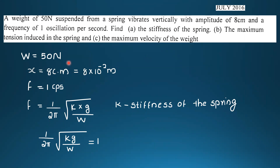Given: W equals 50 Newton, amplitude equals 8 centimeters equal to 8 × 10⁻² meter, frequency equals 1 cycle per second. Using the relation: f equals 1 divided by 2π times the square root of k times g divided by W.